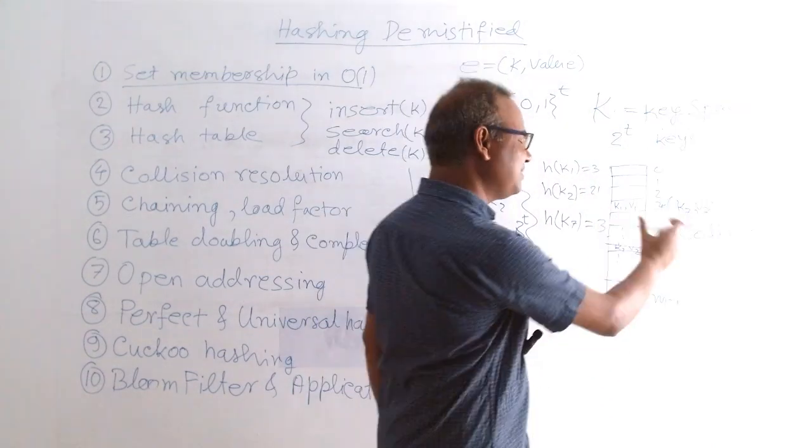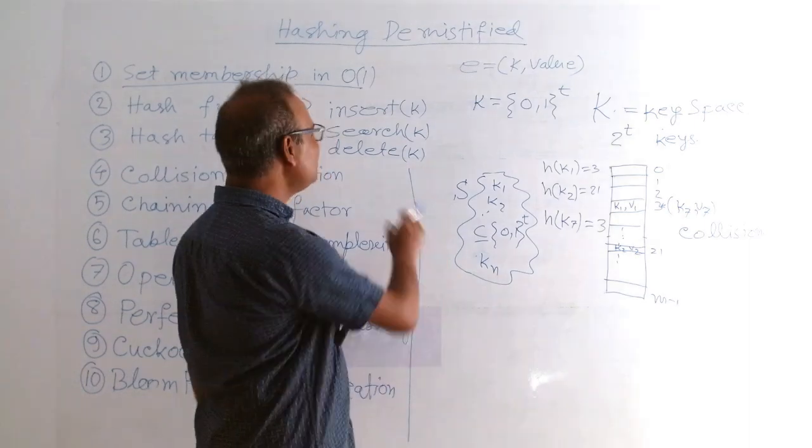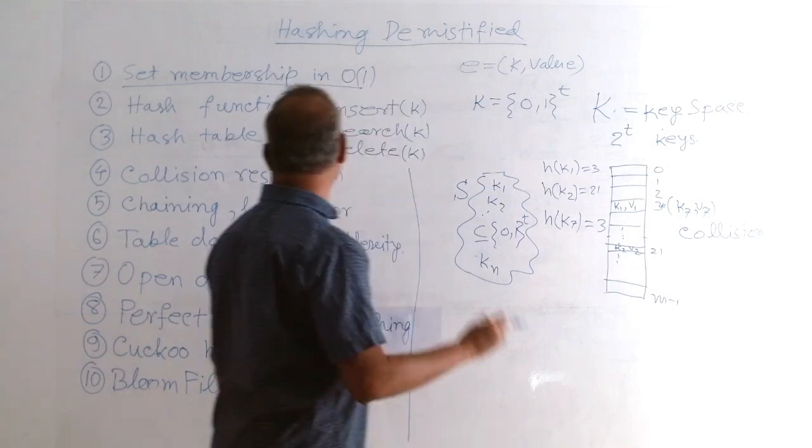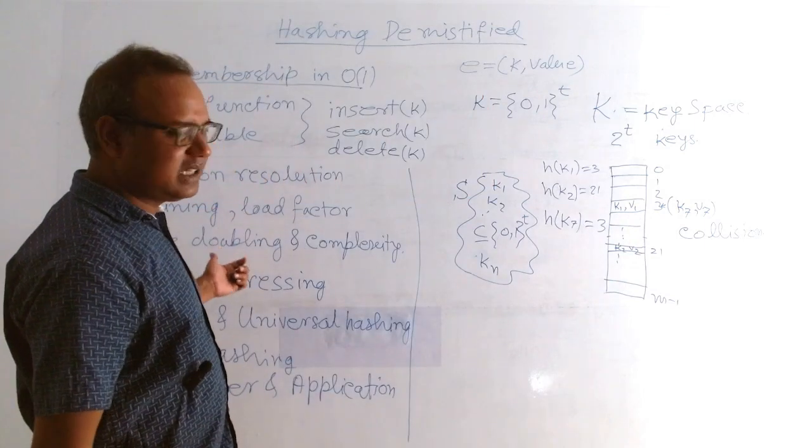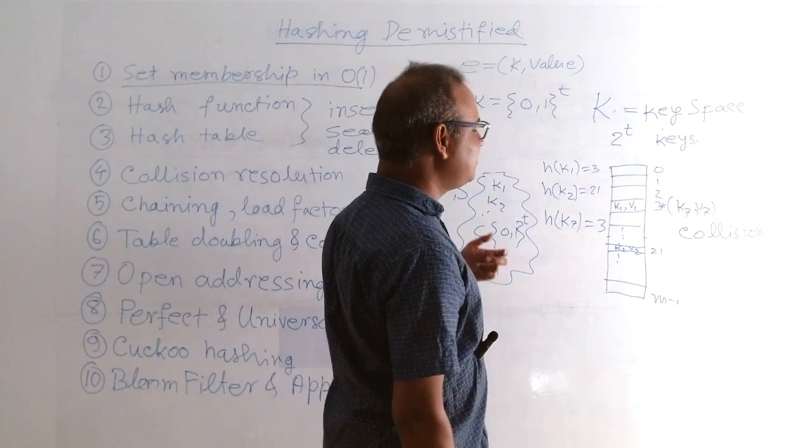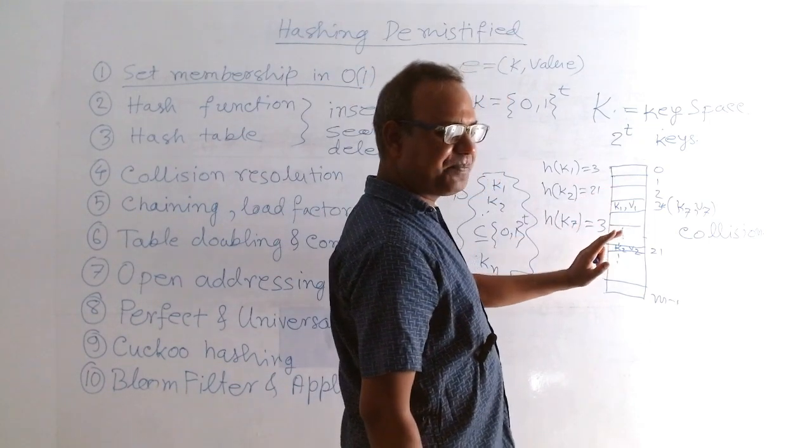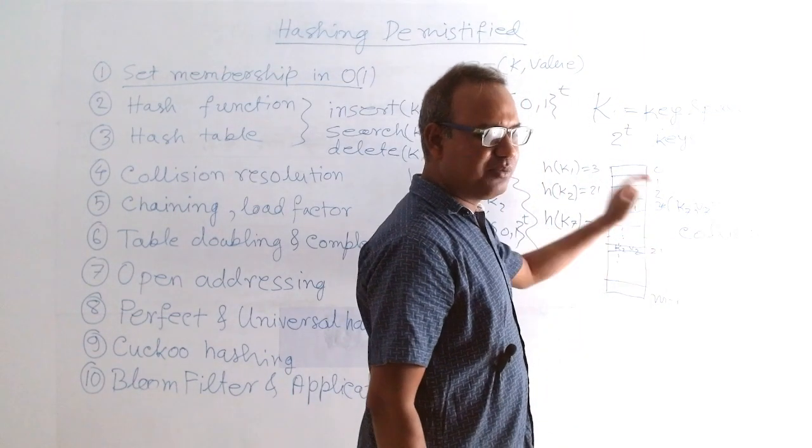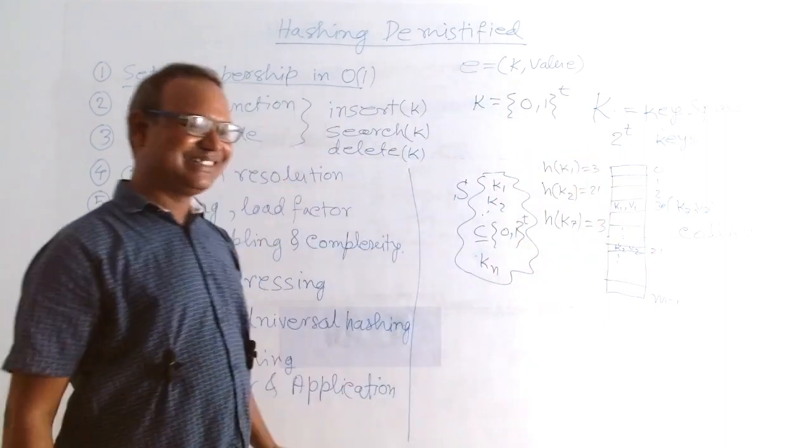So I am coming to how to handle collision, I am coming to that part later. Insert will work in this way, and for collision we have many techniques for resolving collision. There are chaining techniques, there are open addressing techniques. And before that, we have the question: can we choose some function which will never have collision? This is basically going to give us the measure. How many collisions? More collision means bad function, less collision means good hash.